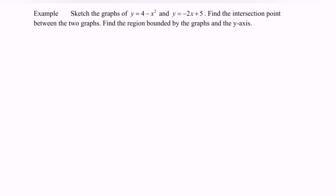Hello everyone. In this video I'm going to discuss the topic integration. Here we have the example for area. First, sketch the graph of y equals 4 minus x squared and y equals negative 2x plus 5. Then find the intersection point between the two graphs. After that, find the region bounded by the graph and the y-axis.